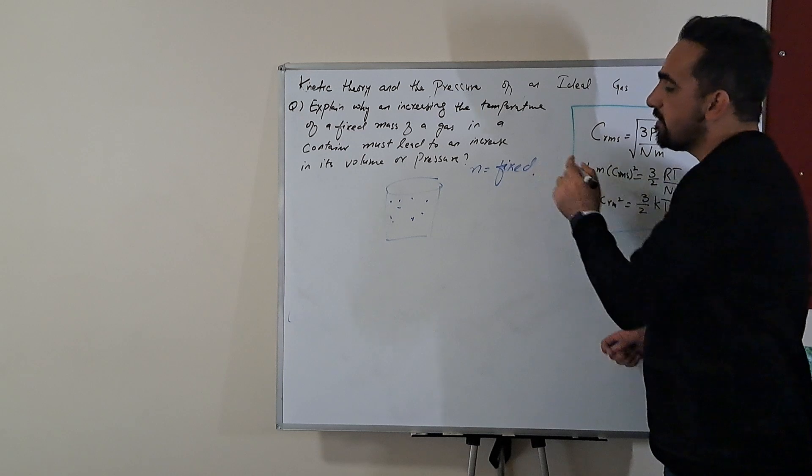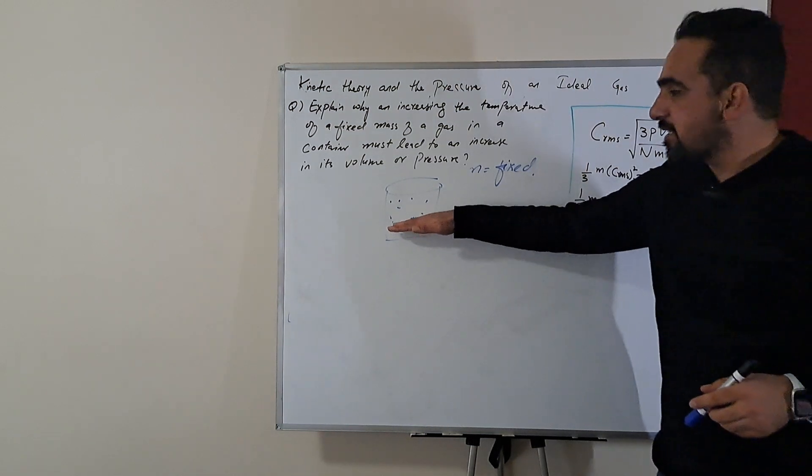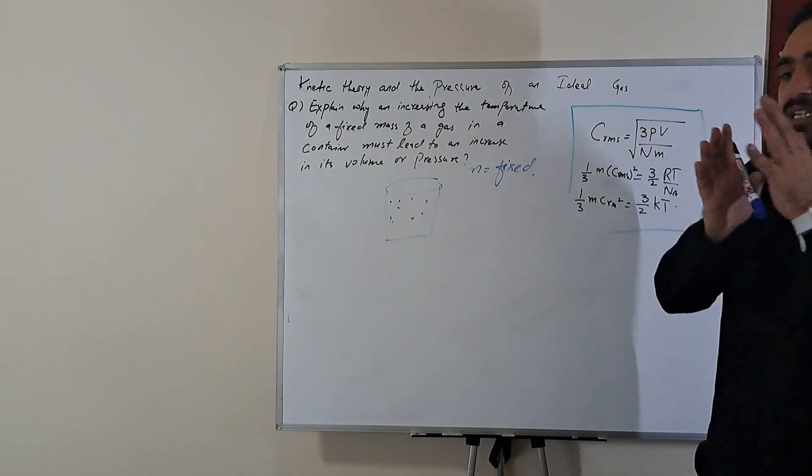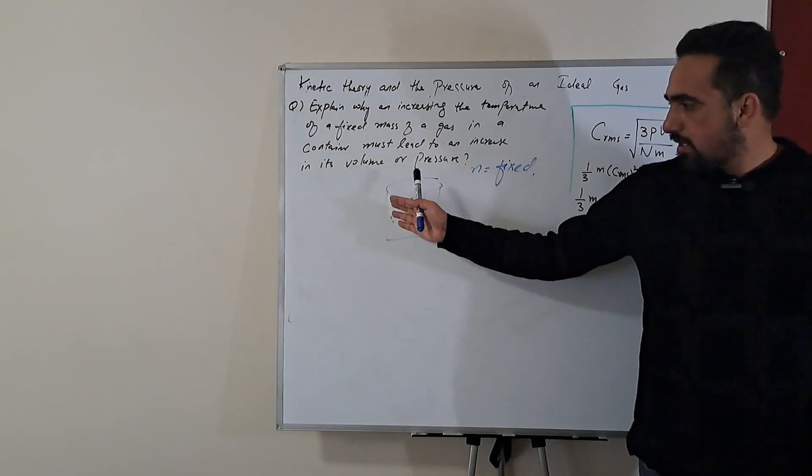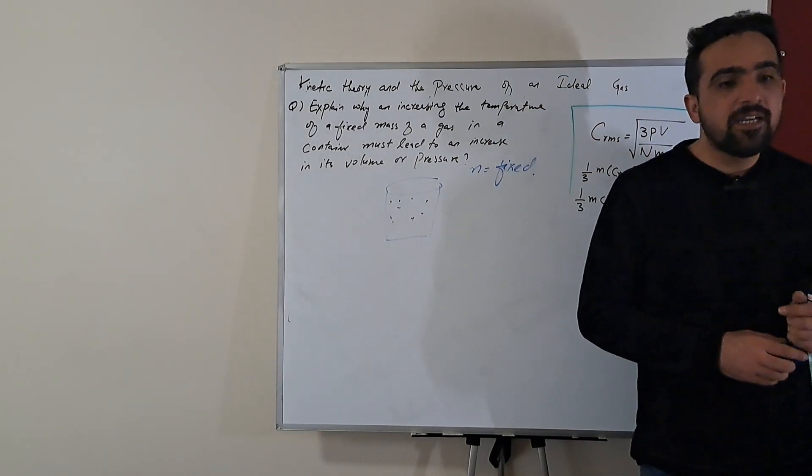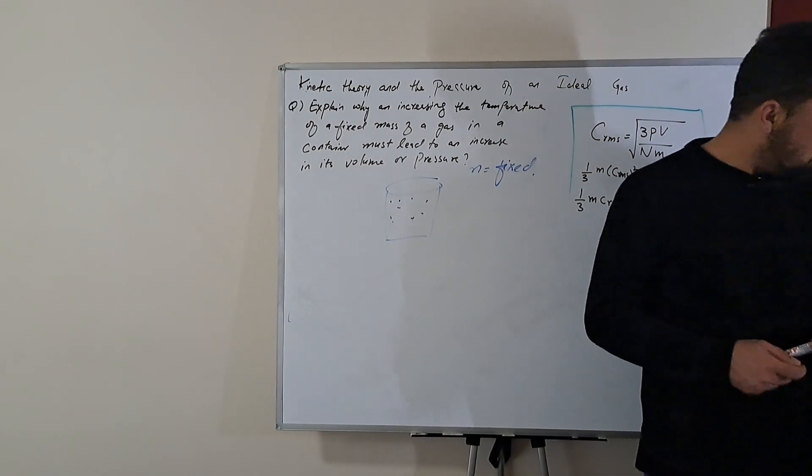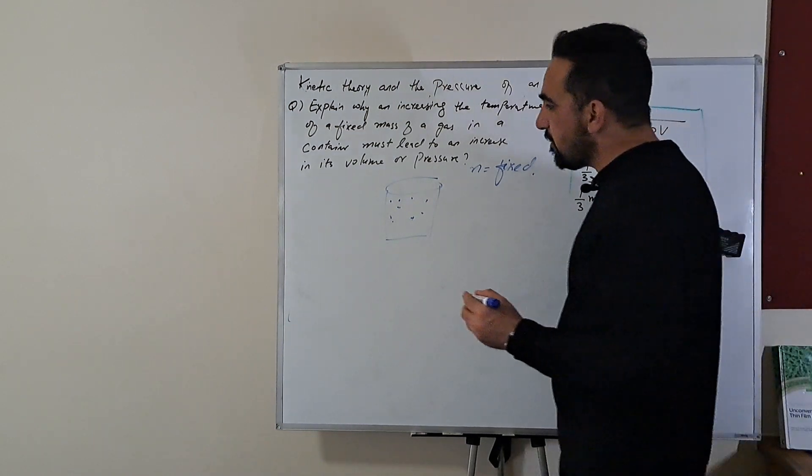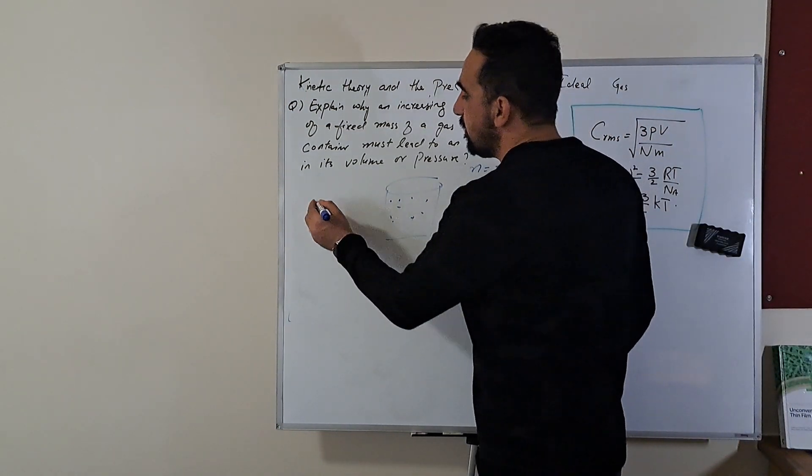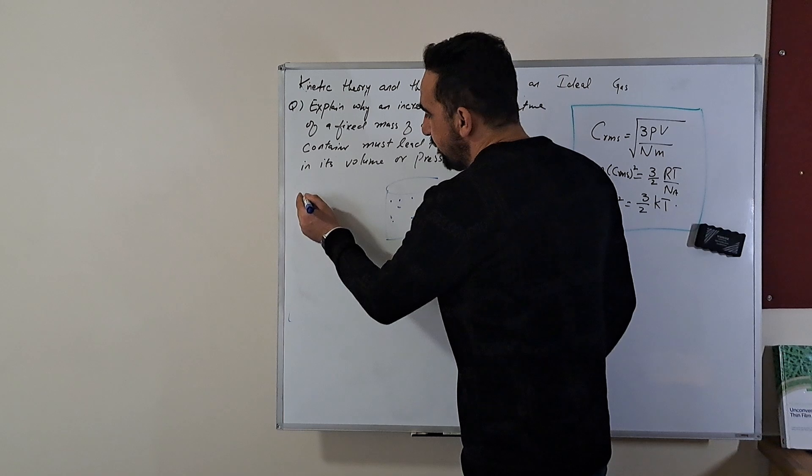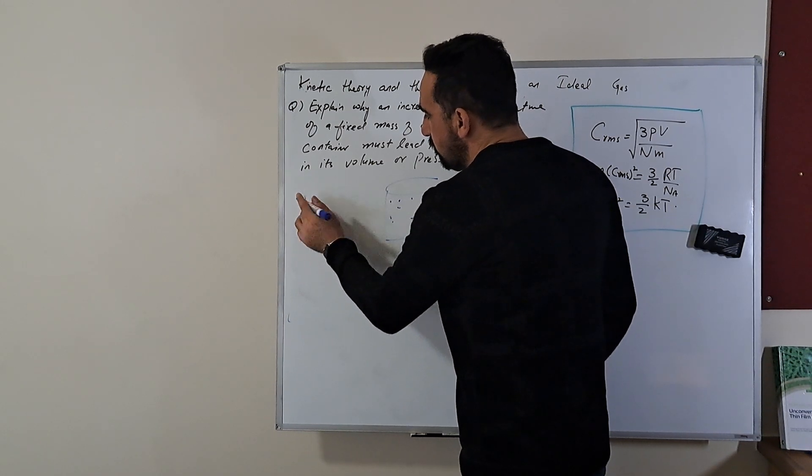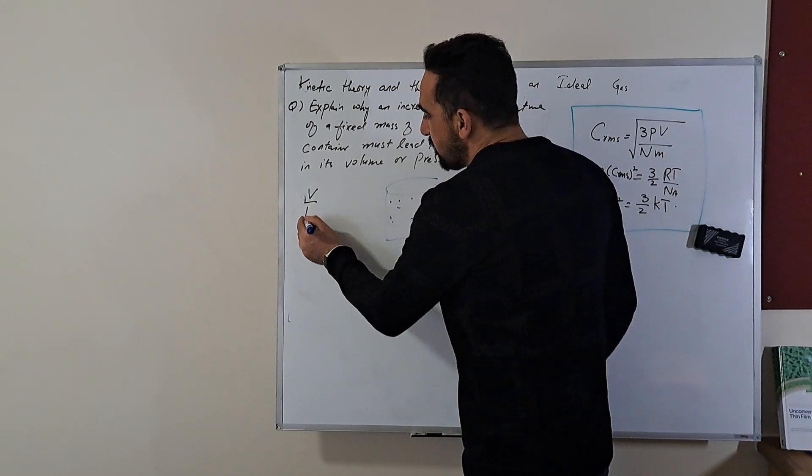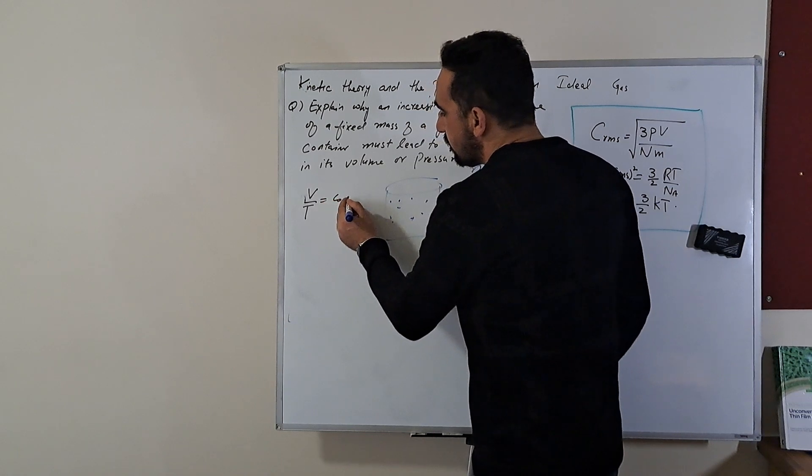Now when I increase its temperature either its volume increases or with the increase in temperature the pressure increases. So we know the relationship between volume and temperature V and T that the volume to temperature ratio is constant.